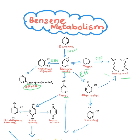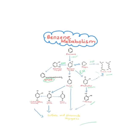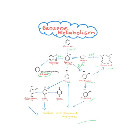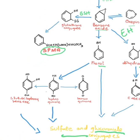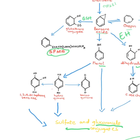Benzene oxide rearranges itself to phenol, or through epoxide hydrolase it can hydrolyze into dihydrodiol, which can then convert into catechol. This catechol is excreted as glucuronide or sulfate conjugates.